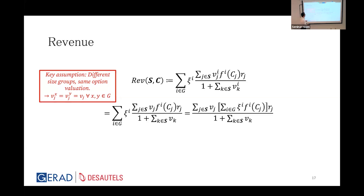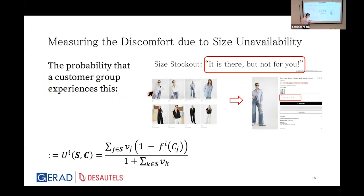For the fairness side, we focus on customer experience and capture the probability that a customer in size group i likes an option but cannot buy it due to size unavailability — specifically, they choose option j but with probability one minus FI(Cj), they will not purchase because of size unavailability. The overall probability that this happens for a customer in size group i given assortment C is captured by a metric we denote UI.